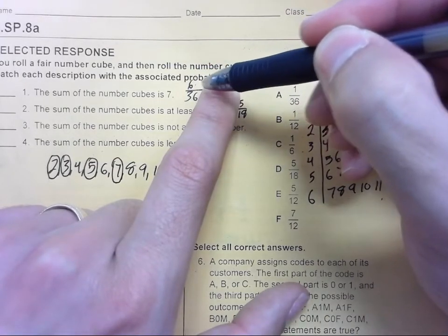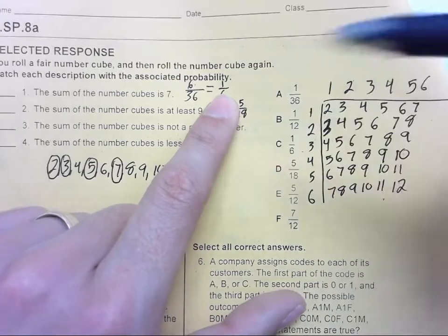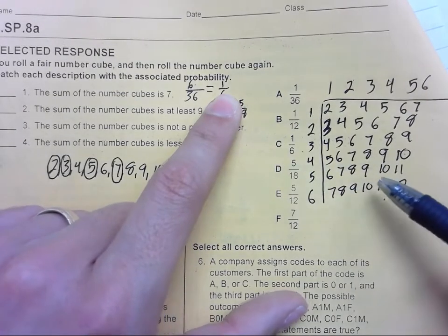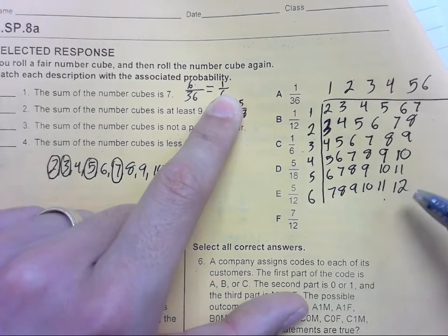The sum of the number cubes is at least 9. So at least 9, so 9 or greater. So there's 1, 2, 3, 4 nines, 3 tens, 2 elevens, and 1 twelve.